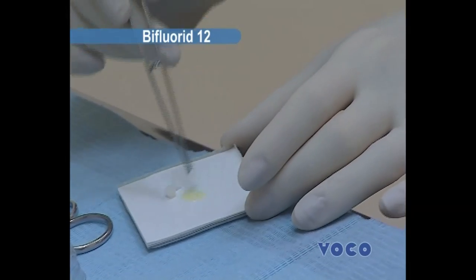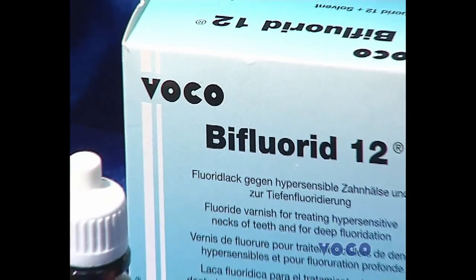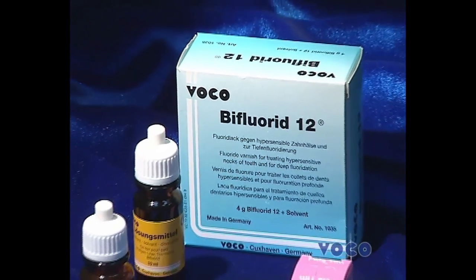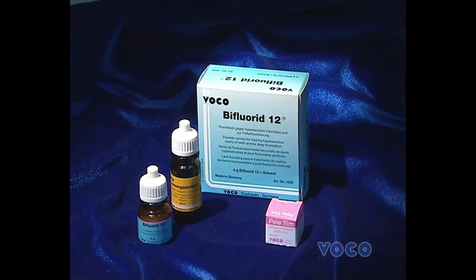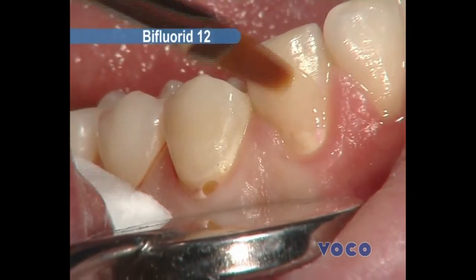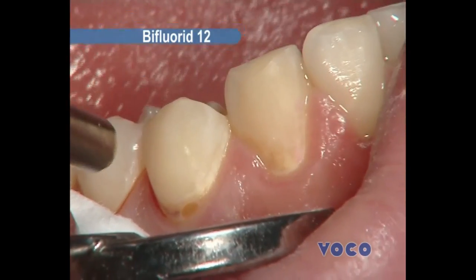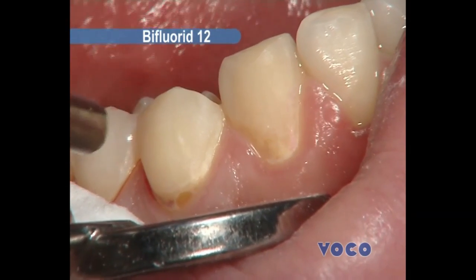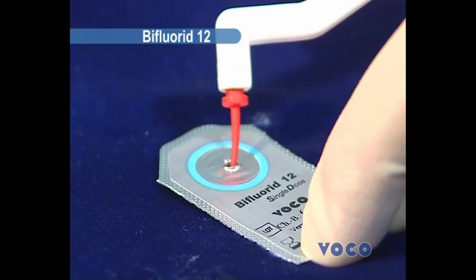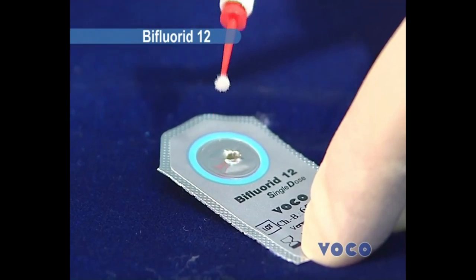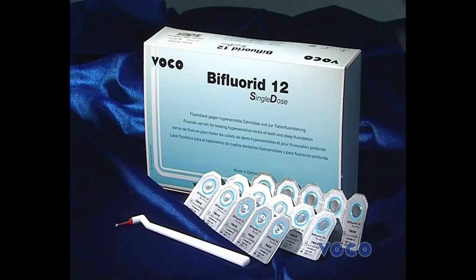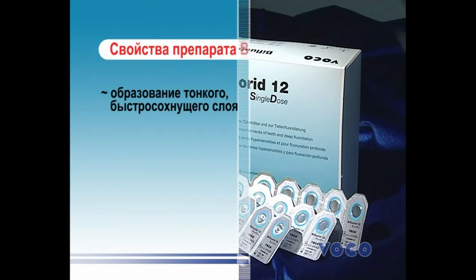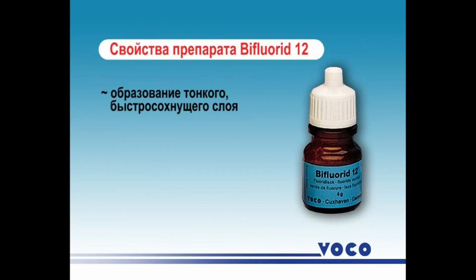If there was a lot of tartar and neck exposure was significant, the course of B-fluorid 12 application is 3 procedures in 1–2 days. B-fluorid 12 is a unique transparent fluorine varnish, a colorless suspension based on natural wood resin with a pleasant taste. The main active ingredients are 6% sodium fluoride and 6% calcium fluoride. Due to the high content of fluoride compounds, it is used only by a dentist or dental employee.